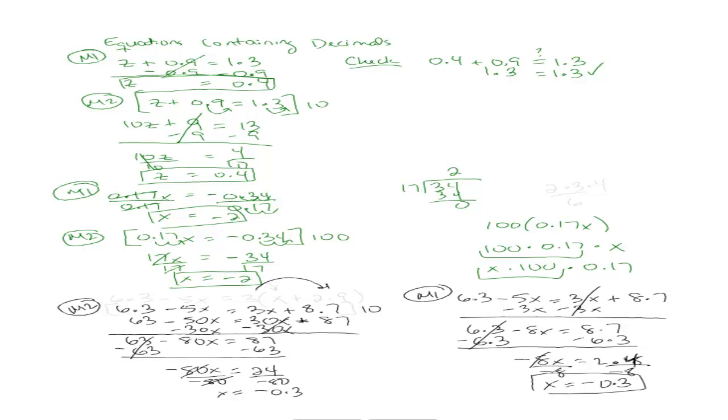So for example, think about multiplying 2 times 3 times 4. I'm not going to multiply 2 times 3 and then 2 times 4. I'm just going to multiply 2 times 3. That's going to give me 6 and then multiply that times 4. So the idea is you only multiply the 0.17 times 100. The x you don't need to multiply by 100. We're not distributing 100. Okay. Good question.